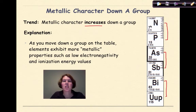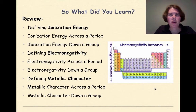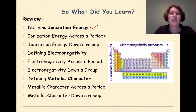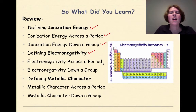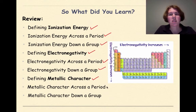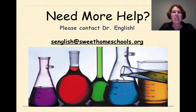So what did we learn in this tutorial? We covered quite a bit: the definition of ionization energy and its trends across a period and down a group; the definition of electronegativity and its trends across a period and down a group; and finally metallic character and its trends across a period and down a group. Need more help? Please feel free to contact me. Have a great day.